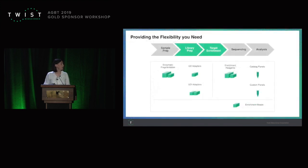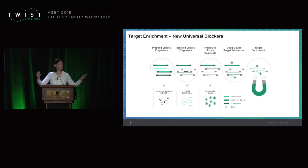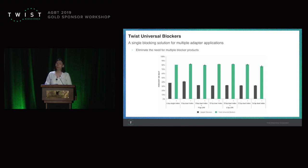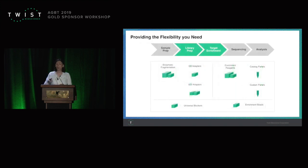The next thing we are adding is universal blockers. In the workflow, adapters can cross-hybridize, so you have to block them. Depending on the size of your barcode, you may have to get blockers for eight or ten base pair barcodes. We've eliminated that by having one blocking solution. I'm showing data from six base pair barcodes on the left, all the way to 14 base pair barcodes on the right. With or without UMI, it's one solution that works for all your samples. So if you're pooling on one lane samples from different collaborators with different library preps, you only need one blocker.